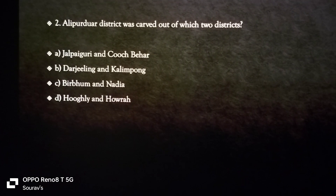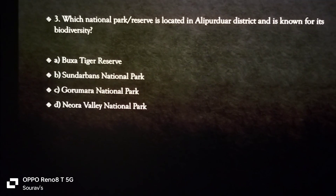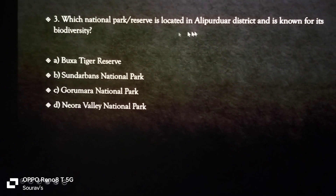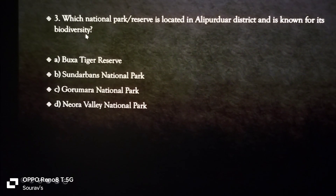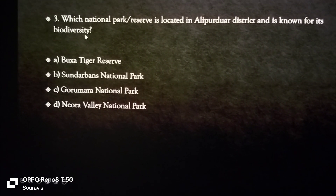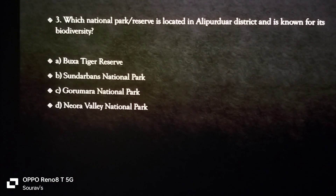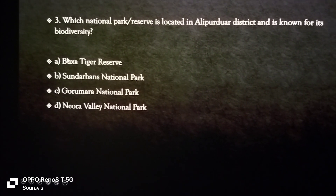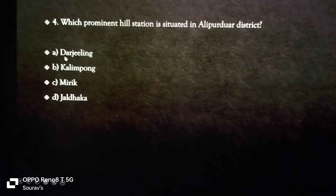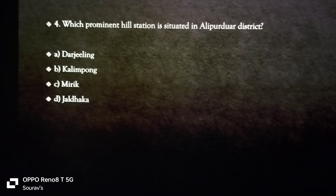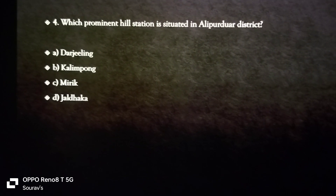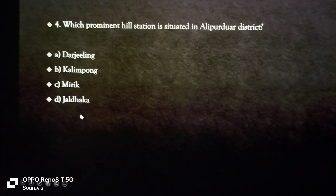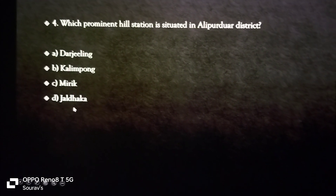The date of formation is notable. The next question is which national park or reserve is located in Alipurduar district and is known for its biodiversity — that is Buxa Tiger Reserve. Which hill station is located in Alipurduar district? It is Jalda hill station, situated in Alipurduar district.